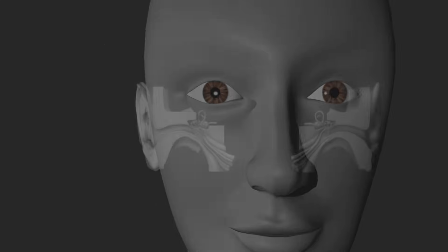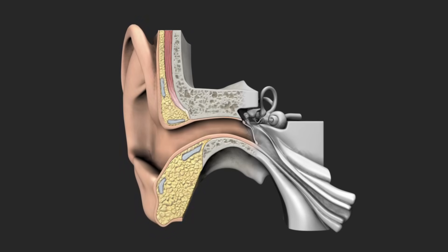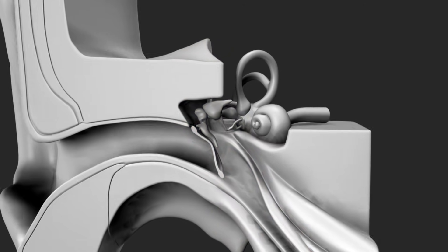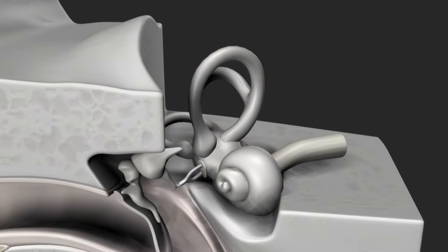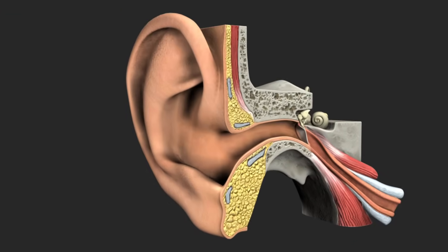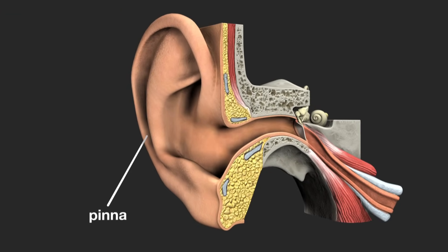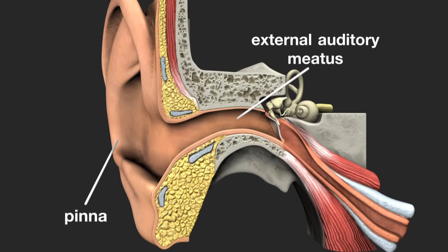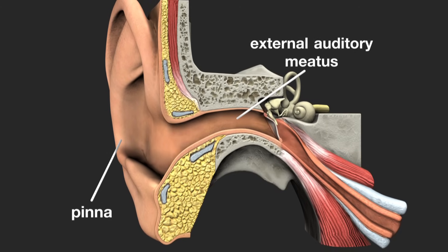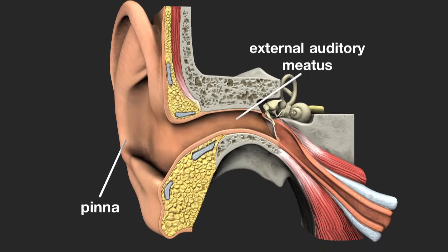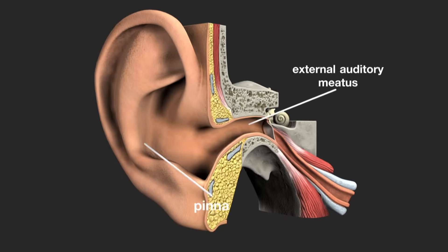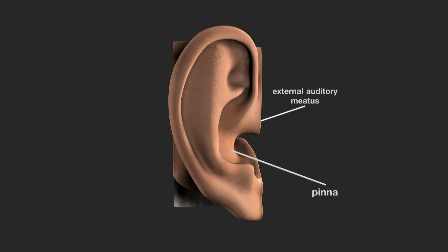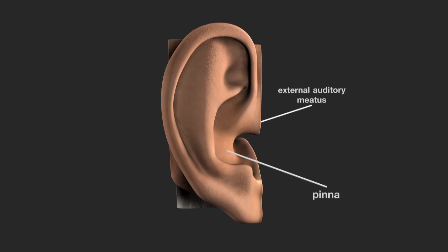The human ear is made up of three parts: the outer, middle, and inner ear. The outer ear consists of the pinna, which serves as protection for the delicate inner parts of the ear, and the external auditory meatus — the ear canal — which collects sound and directs it towards the eardrum. The shape of the pinna also helps to detect where sounds are coming from in the vertical plane, that is, from above or below the ear.